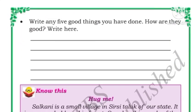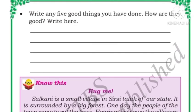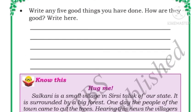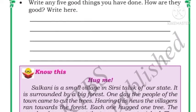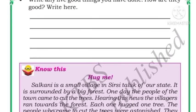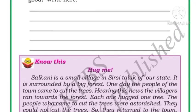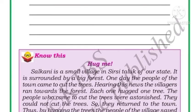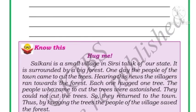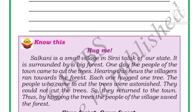Write any five good things you have done and explain how they are good. Children, all of you do good things — write here what good things you have done. For example, have you helped your mother, helped an elder cross the road, shared your tiffin box with a friend who forgot theirs, or shared your pencil? Write all these things here.